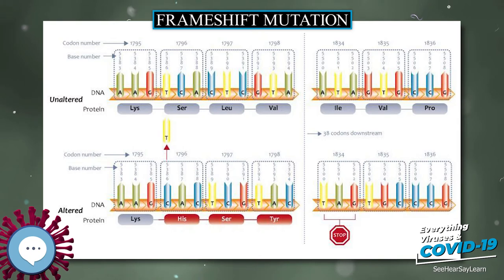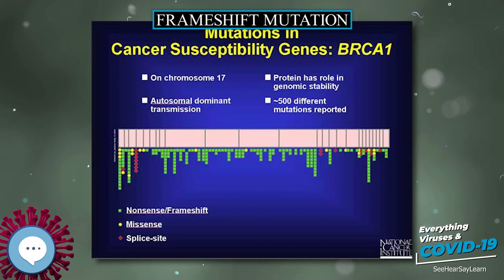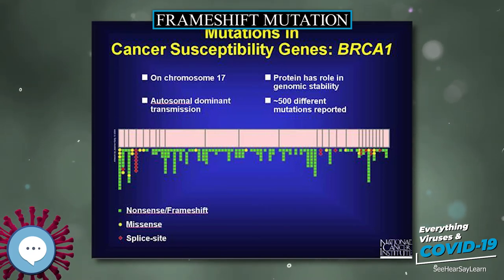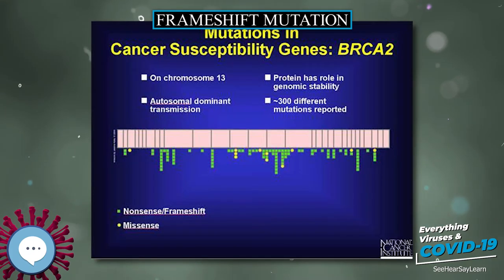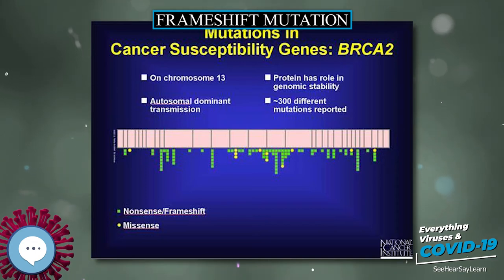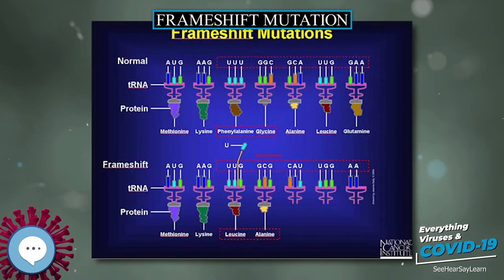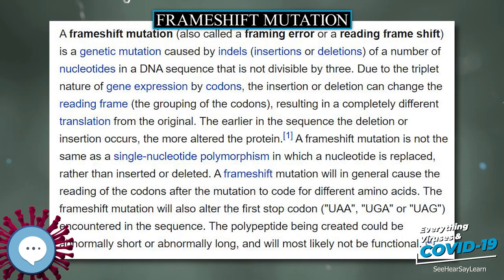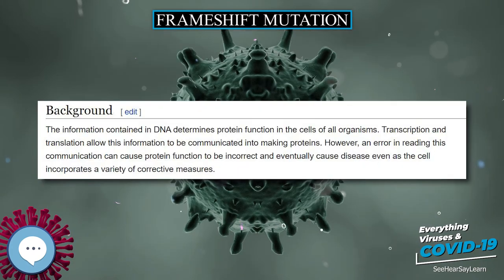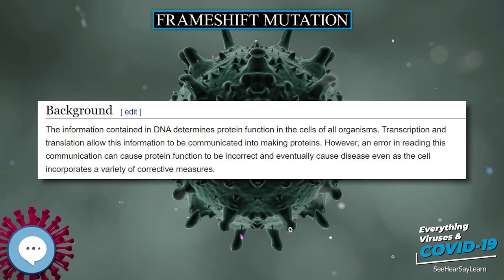As each codon triplet is read, amino acids are joined together until a stop codon — UAG, UGA, or UAA — is reached, at which point the polypeptide protein has been synthesized and is released. For every 1000 amino acids incorporated into the protein, no more than one is incorrect. This fidelity of codon recognition is accomplished by proper base pairing at the ribosome A site, GTP hydrolysis activity of EF-Tu, a form of kinetic stability, and a proofreading mechanism as EF-Tu is released.